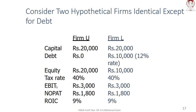EBIT is Earnings Before Interest and Taxes. Net Operating Profit After Taxes is $100. Return on Invested Capital is ROIC.